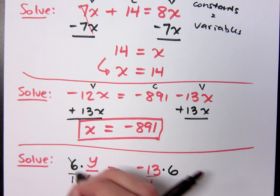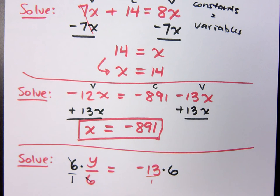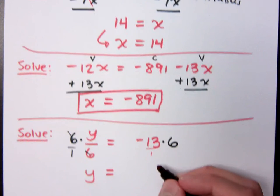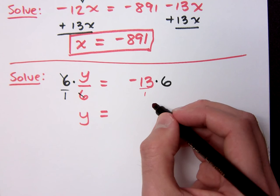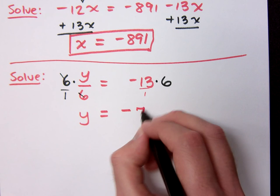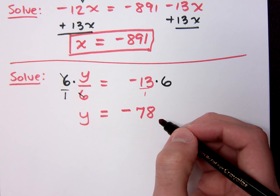So the 6 is reduced to give me just y equals what? What's on the right side? I get negative 78. Do you all agree?